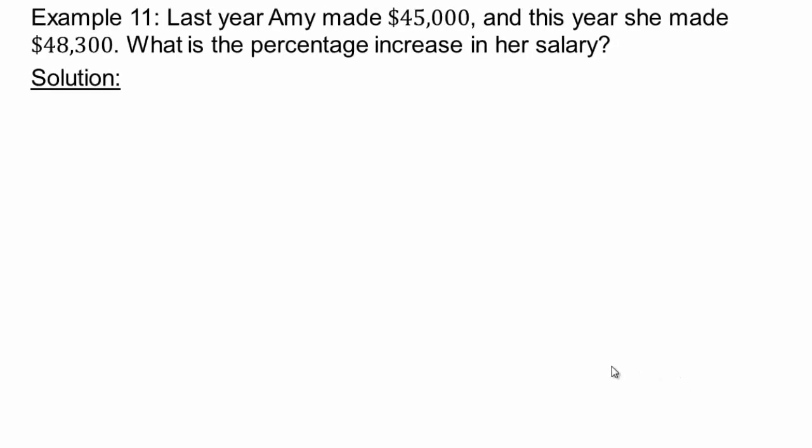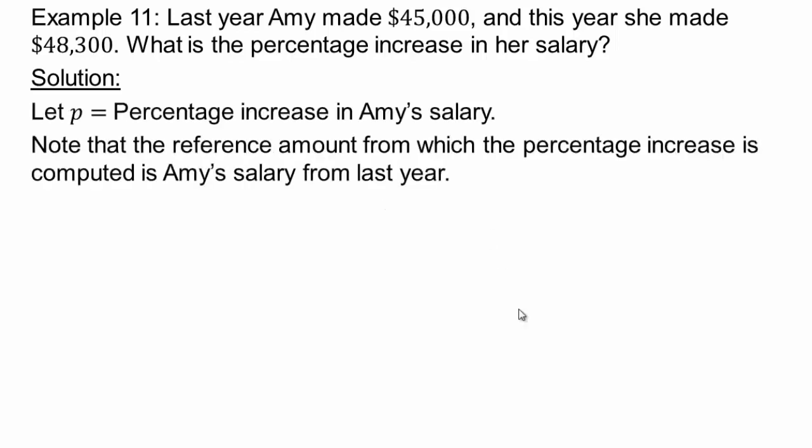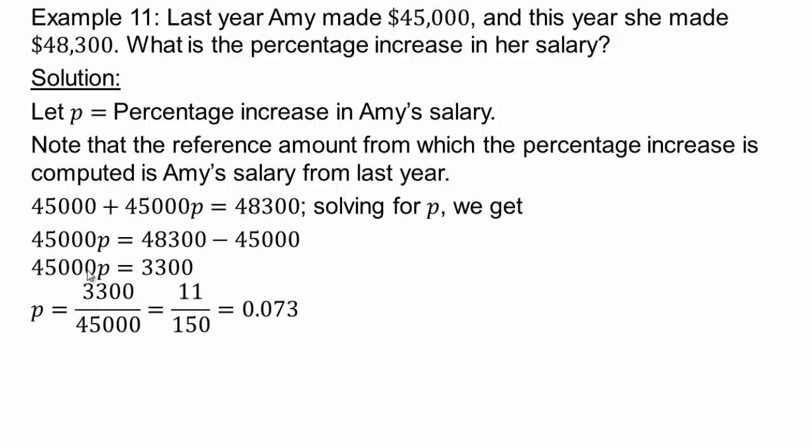Last year Amy made $45,000. This year she made $48,300. What's the percentage increase in her salary? So anytime you have percentage increase or percentage decrease, the first thing to do is get a variable. So let's say p is the percentage increase. So you have to take the reference amount, which is the original, the difference between that and the new. So that would be $48,300 minus $45,000 and then divide it by the original amount. Right? So the difference divided by original amount. That's how you compute percentage increase or decrease depending on what you're looking for. And so in this case, what is the percentage increase? 7.3% because you move the decimal one, two, because you're looking at percentages as a decimal here.